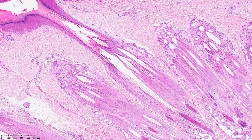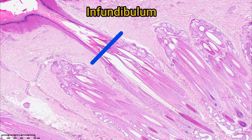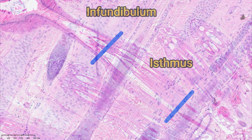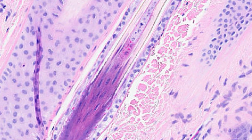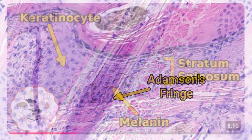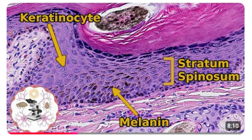There are three anatomic areas of the hair follicle. The infundibulum is defined as the portion from the epidermal surface to the sebaceous duct. The isthmus continues from the sebaceous duct to the junction of the cornified and non-cornified inner root sheath, also known as Adamson's fringe. If you don't understand the term cornified, you can check out the first video on the epidermis for a more detailed explanation.